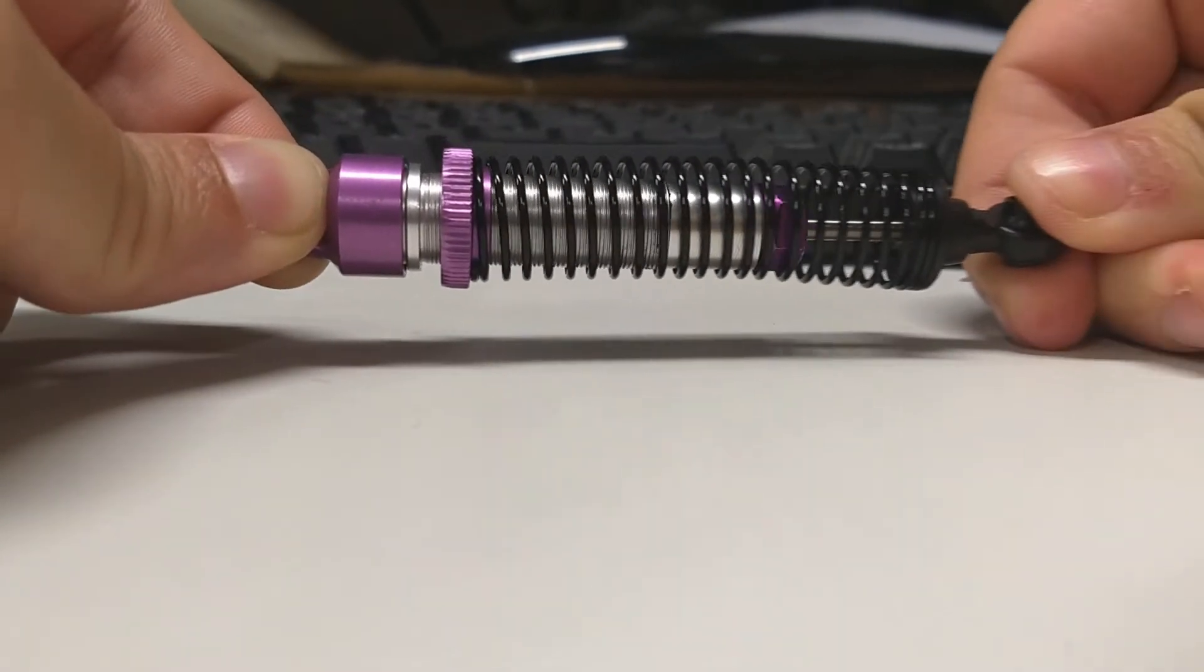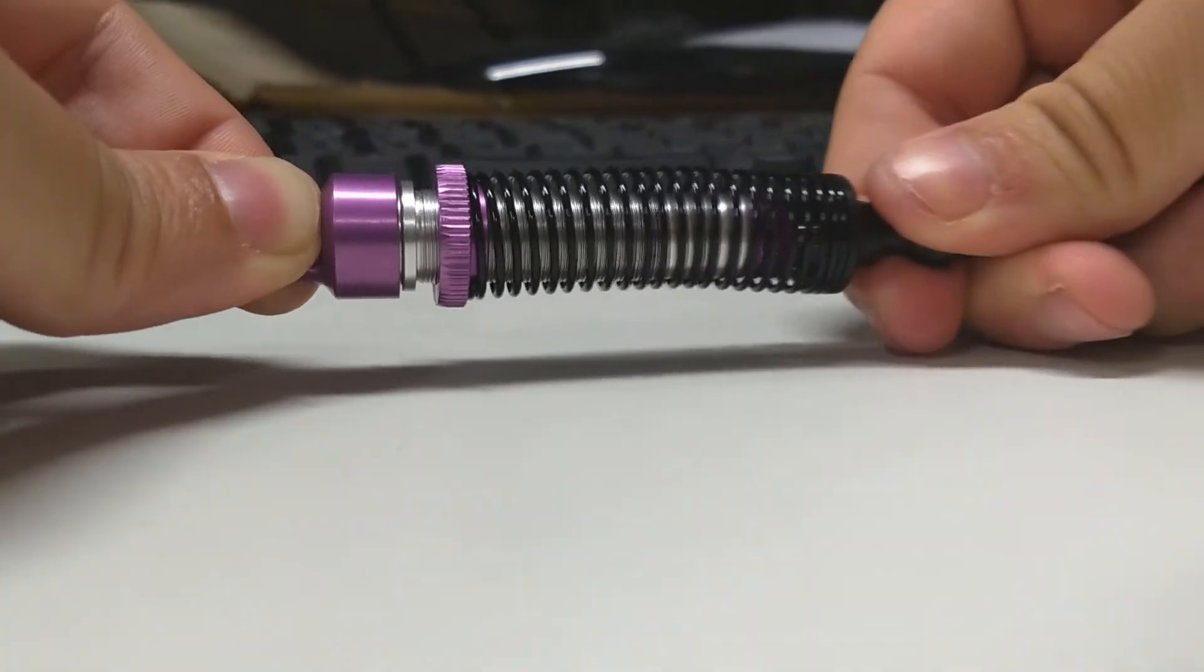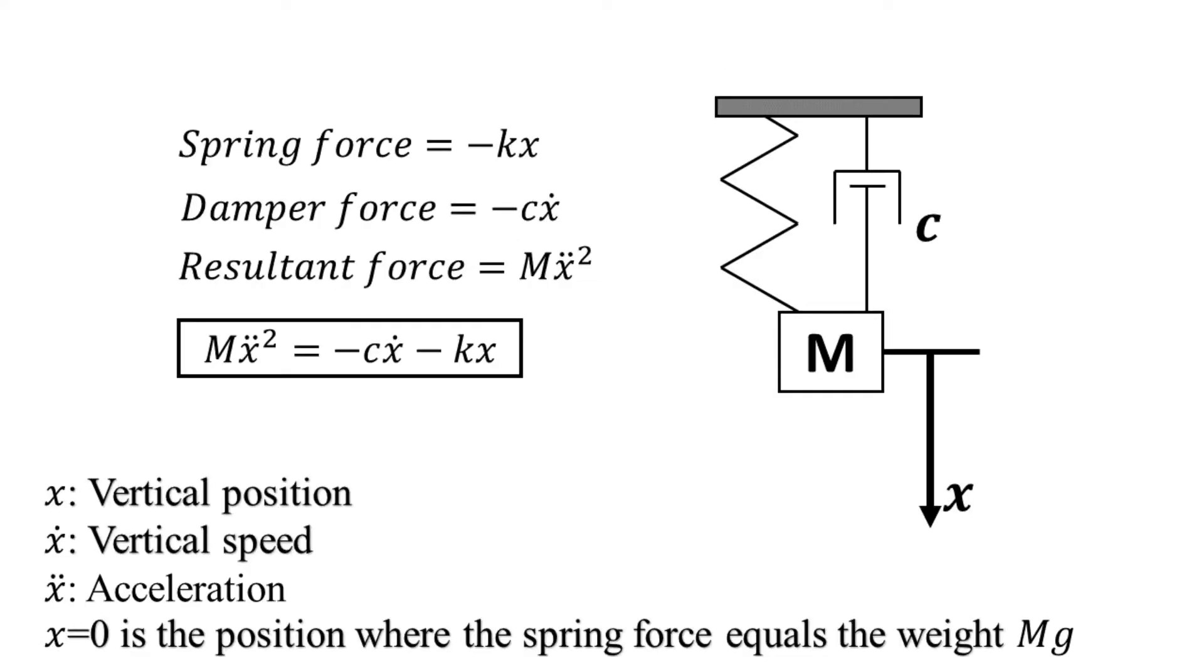We can better understand the behavior of the damped piston by looking at an extension of the spring mass system. To the former spring mass system, we added a third element, the damper. The damper forces are proportional and opposite to the speed of the damped body.